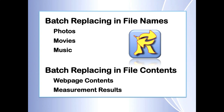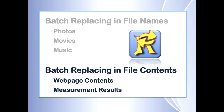The first tutorial covered batch replacement and batch renaming of filenames. In this second tutorial we will find and replace file contents. The examples given in this video cover batch replacement in web page contents and files that you get from different programs or machines and want to adjust to your own needs.